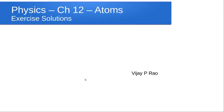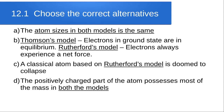Welcome back. We'll look at the chapter on atoms from class twelfth physics, and the solutions for the exercises in the textbook. Question 12.1a: the size of the atom in Thomson's model is dash the atomic size in Rutherford's model. In both models, whether Thomson's or Rutherford's, the atomic size is the same — so the answer is it's no different in either of the models.